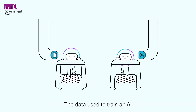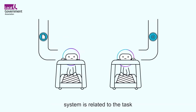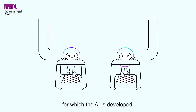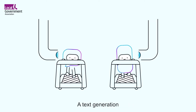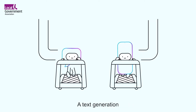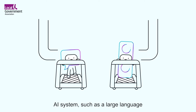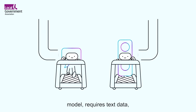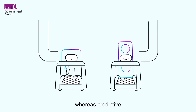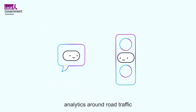The data used to train an AI system is related to the task for which the AI is developed. A text generation AI system, such as a large language model, requires text data, whereas predictive analytics around road traffic might rely on sensor data.